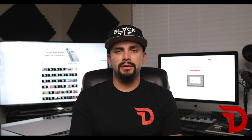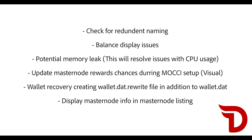Some of those bug fixes include: check for redundant naming, balance display issues, potential memory leak — this will resolve issues with CPU usage — update Masternode rewards chances during setup, visual wallet recovery creating wallet.dat.rewrite file in addition to wallet.dat, and display Masternode info in Masternode listing.